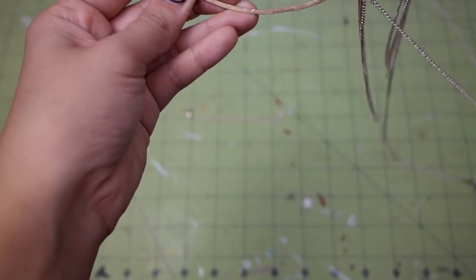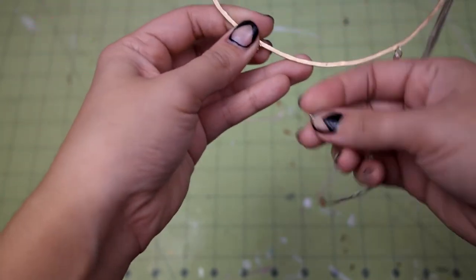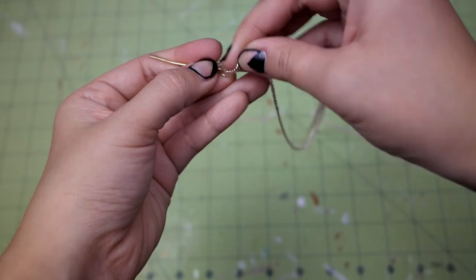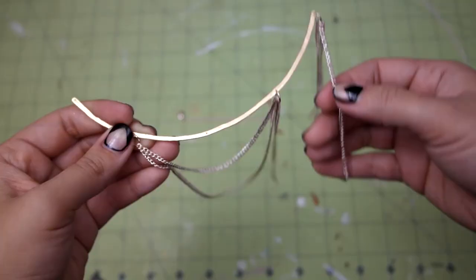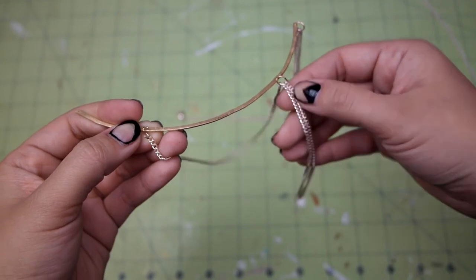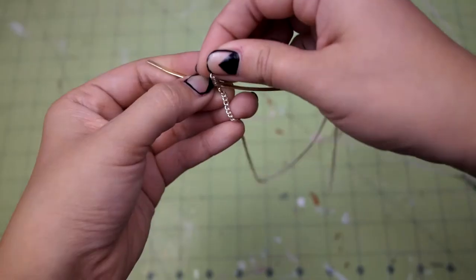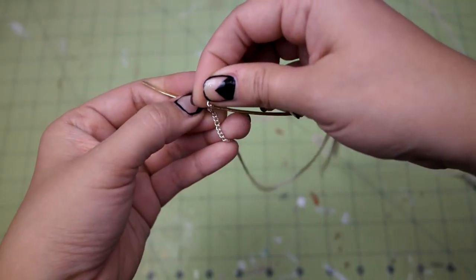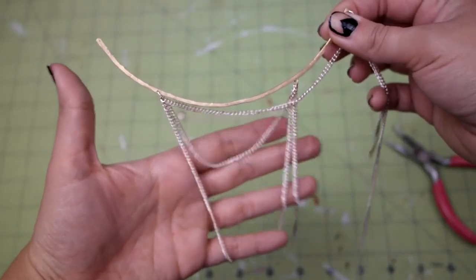Onto the jump ring, attach the ten inch piece of chain from hole four, the five inch piece of chain from hole five, and then one of the five inch lengths of chain from hole four. Close that jump ring and it's on to the first hole.